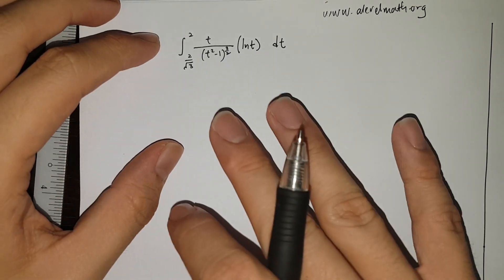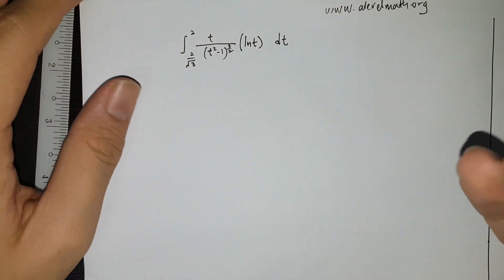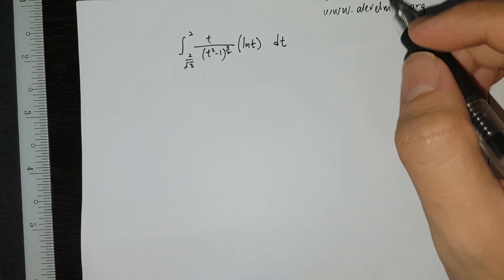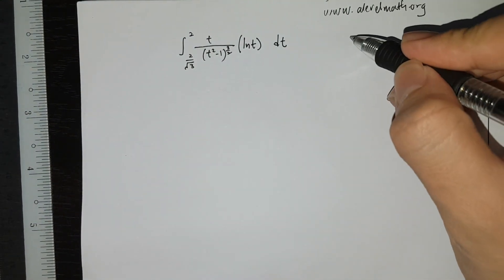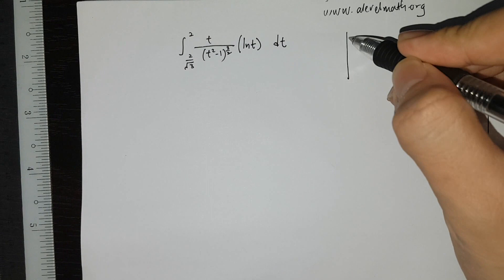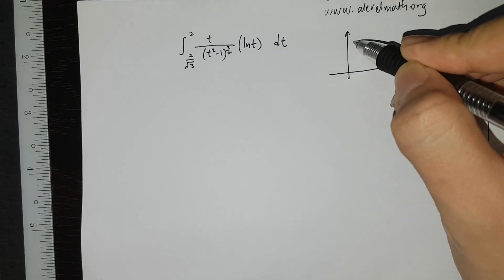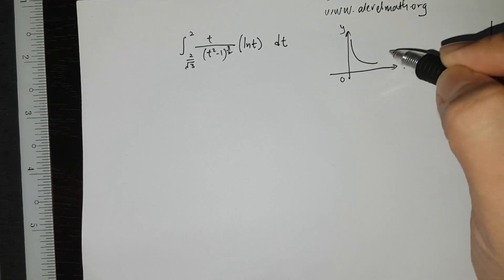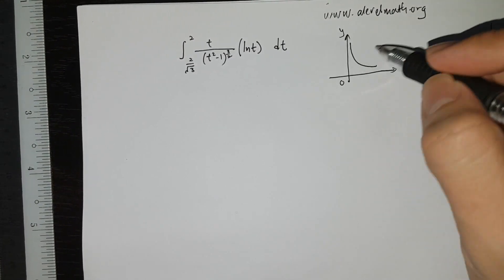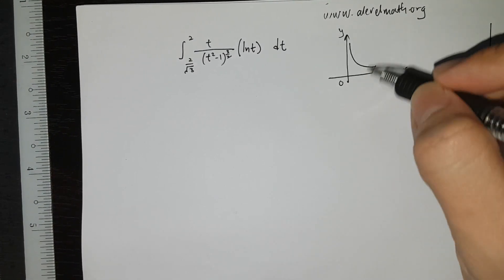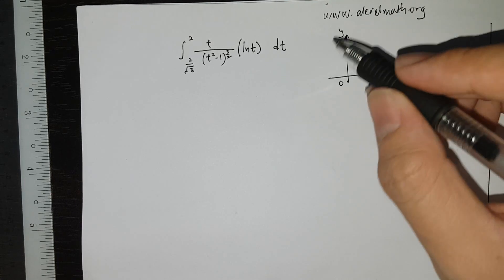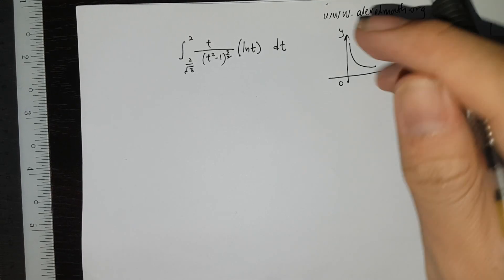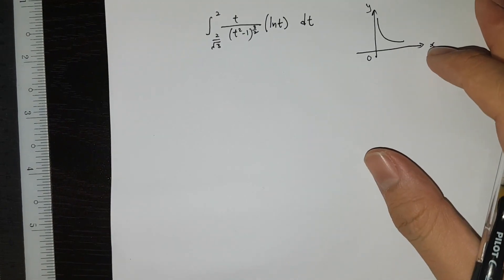First off, you should really use your GDC and see how this graph looks like and see whether there's a negative area or not, just to be sure that it doesn't cut. When you sketch your GDC, you're supposed to get a graph as such. So you know that there's no negative area, so you don't have to worry about the x-intercept. So then you can just start.